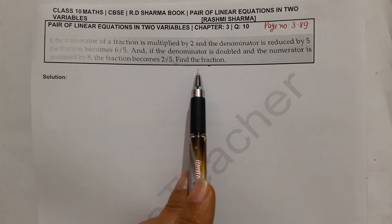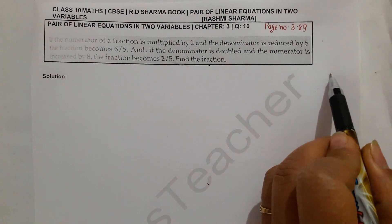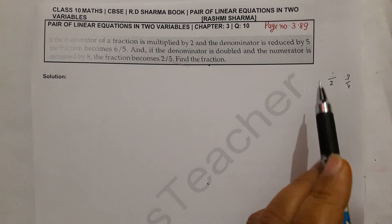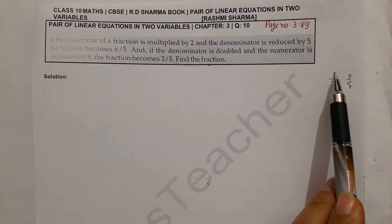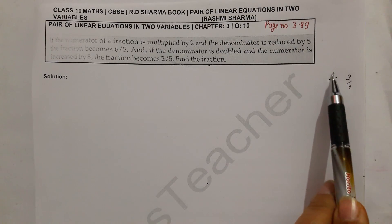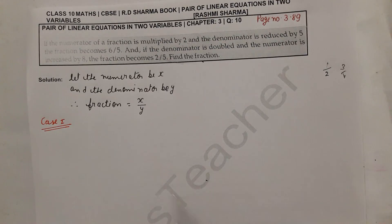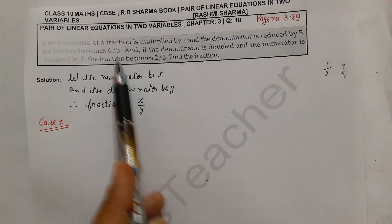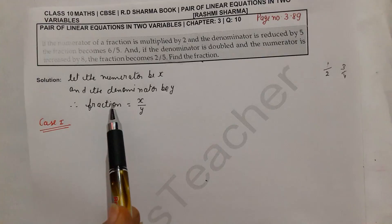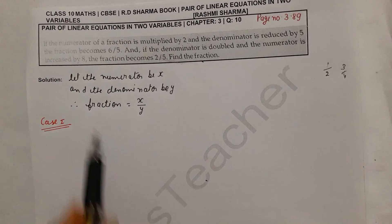We have to find the fraction. We will let the fraction be in the form of p upon q. In this fraction there is a numerator and a denominator. We will let the numerator be x and the denominator be y, so our fraction is x upon y.